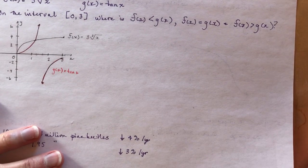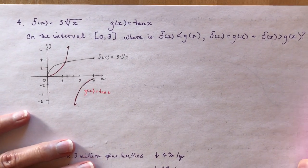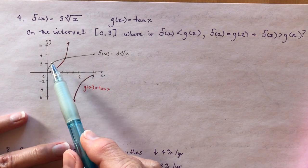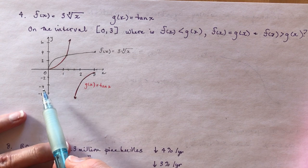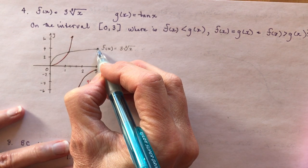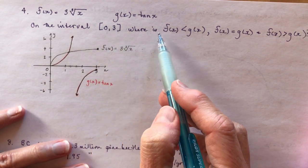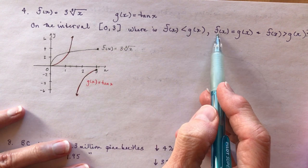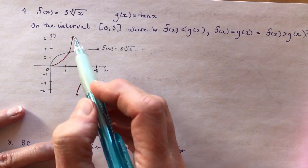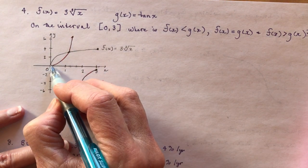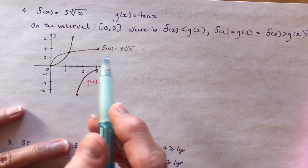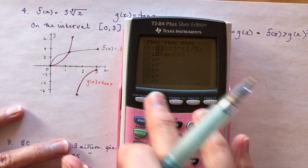Question three uses f(x) = 3·∛x and g(x) = tan(x). The graph was given in the textbook on the interval between 0 and 3 with solid dots at the endpoints. I want to know where f(x) < g(x), f(x) = g(x), and f(x) > g(x). There are two intersection points: one at x = 0 and one somewhere around x = 1.3.